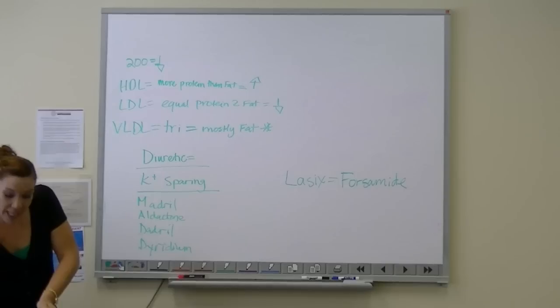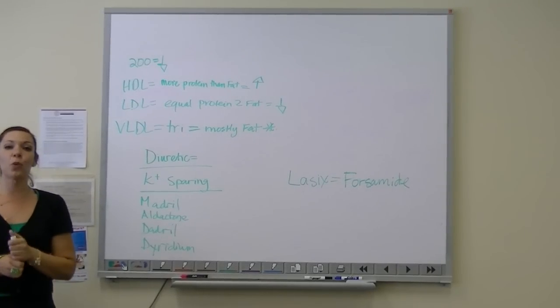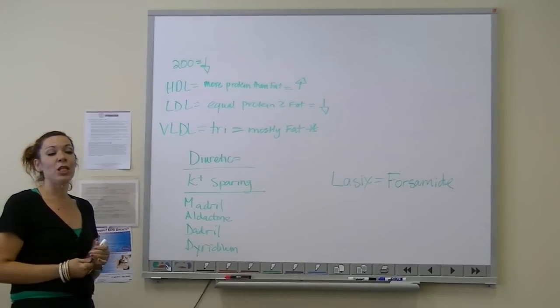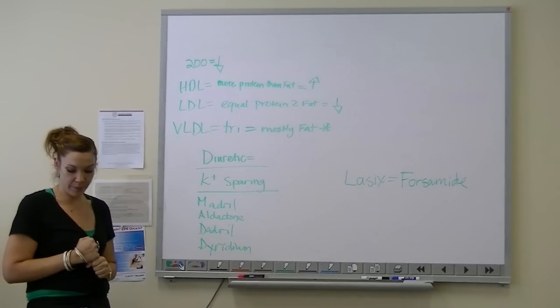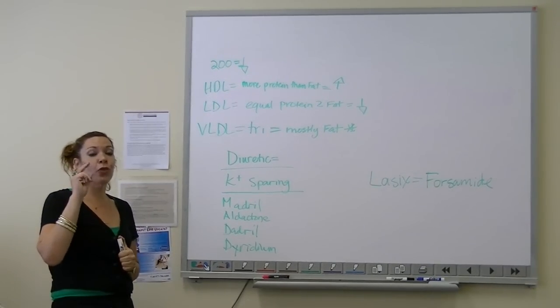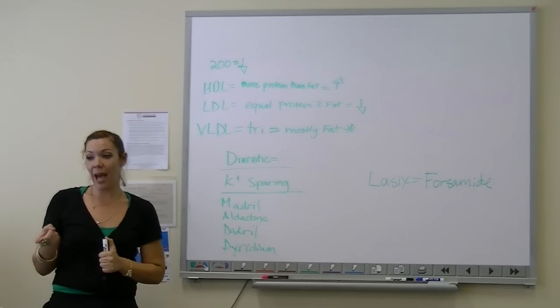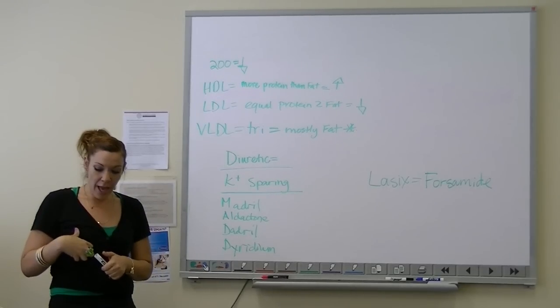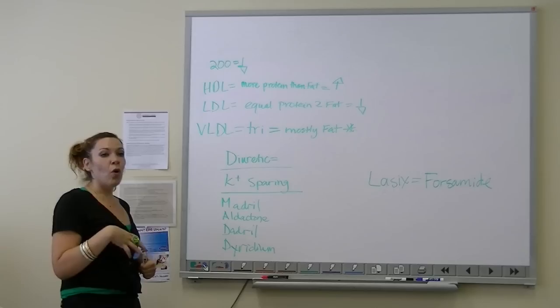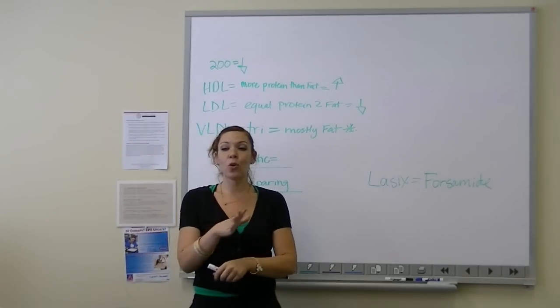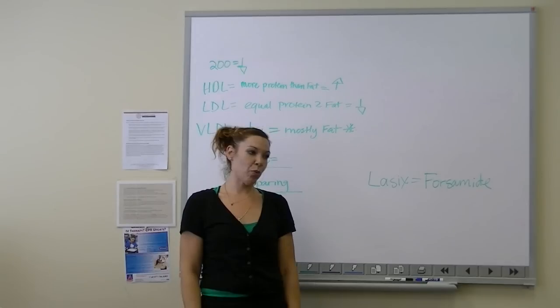We're going to get a question that says, how do we store nitroglycerin tablets? One, they need to be in a dark colored bottle. They are only good for three to six months. After that, we need to discard them and get a new order. And we avoid moisture and heat, so we never keep them in the bathroom.